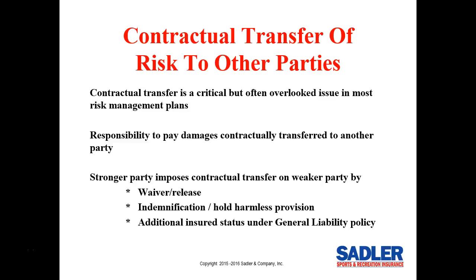Contractual transfer is a critical issue when it comes to protecting both the national association and local organizations and their loss records with the insurance carrier — yet most risk management programs don't even address this issue. Contractual transfer means that one party's responsibility for paying for damages is transferred to another party by contract. Typically, the stronger party transfers its obligation to pay for certain damages to the weaker party by way of waiver release, indemnification hold harmless provision, or additional insured status under a general liability policy.